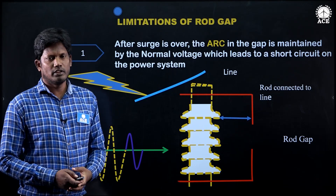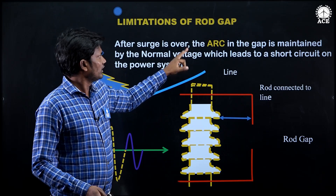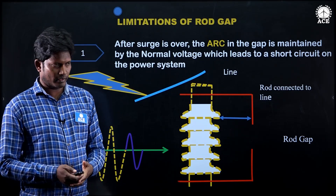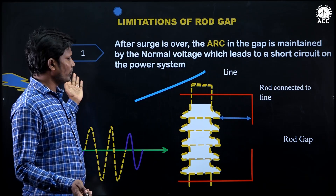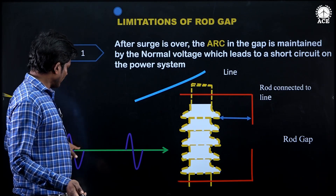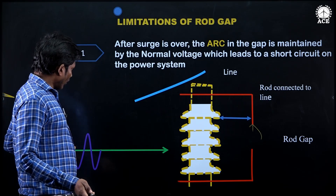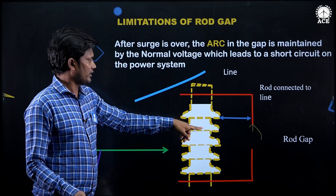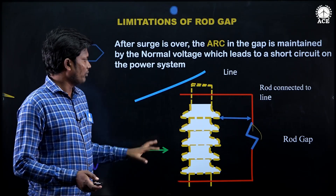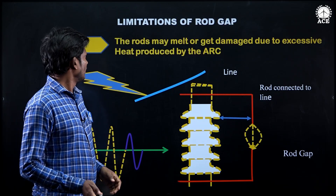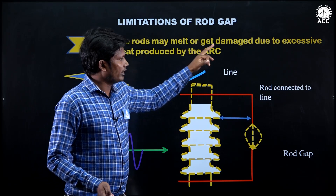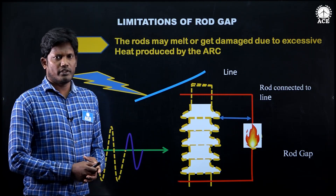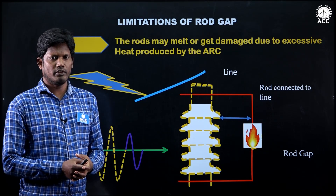Now the limitations of the rod gap. The first one is: after the surge is over, the arc in the gap is maintained by normal voltage, which leads to a short circuit on the power system. When the surge is over — meaning there is no lightning — the over voltage becomes normal voltage, and this normal voltage maintains the arc, causing a short circuit on the power system. The second limitation is the rod may get melted or damaged due to excessive heat produced by the rod gap. Due to these limitations, the rod gap arrestor is used only for backup protection of the main arrestor.